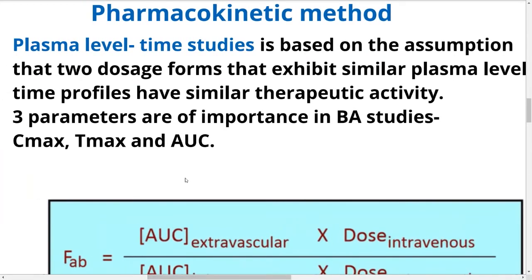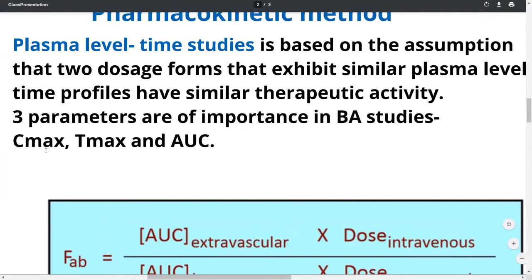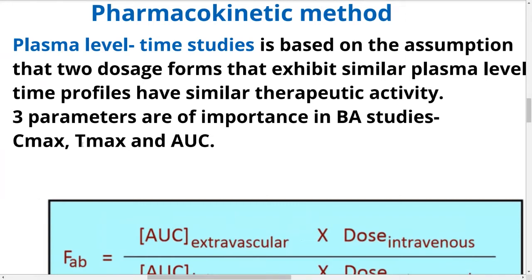The three parameters of importance in bioavailability studies are Cmax, Tmax, and AUC. Cmax refers to the maximum concentration following a certain dose of the drug. Tmax is the time required for the plasma concentration to reach maximum concentration. AUC stands for area under the curve.